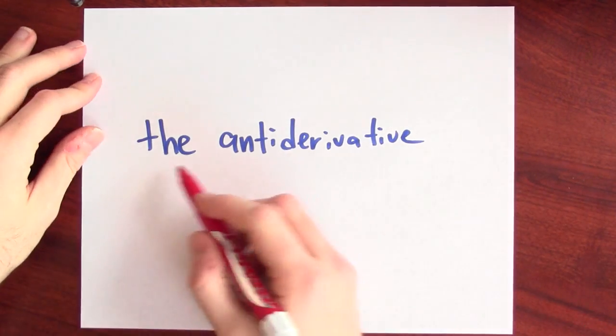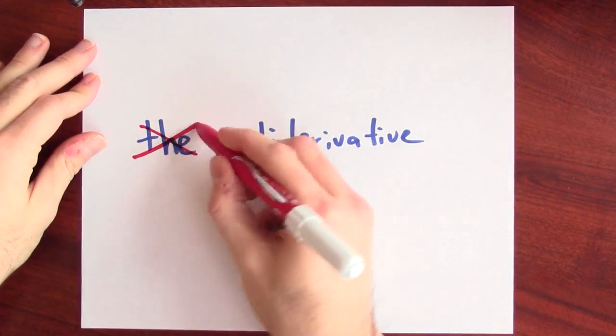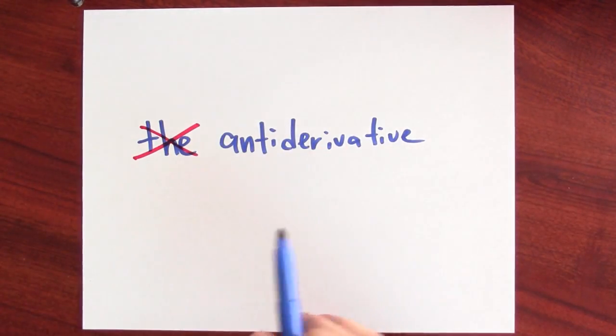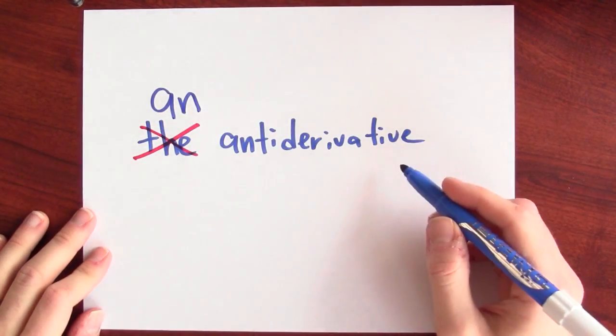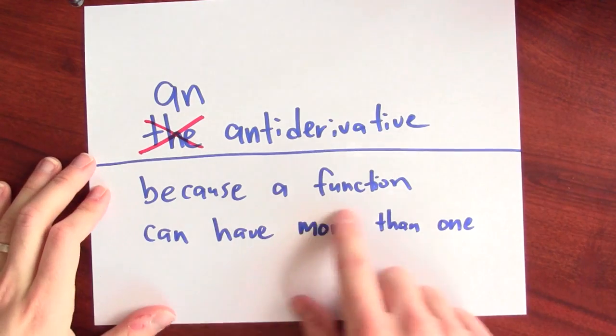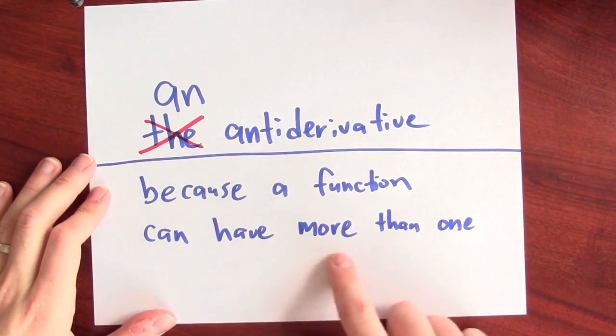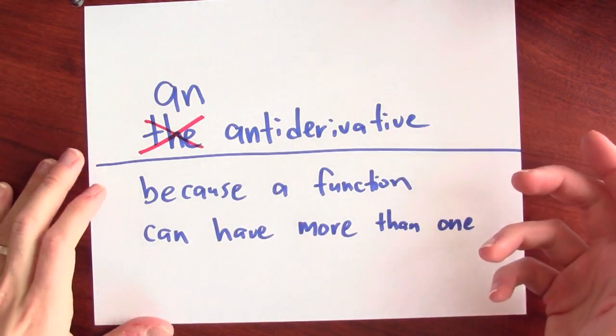Sometimes people ask for the antiderivative, but it's probably better to talk about an antiderivative. Why is the 'the' vs 'an' distinction really important? Because a function can have more than one antiderivative.